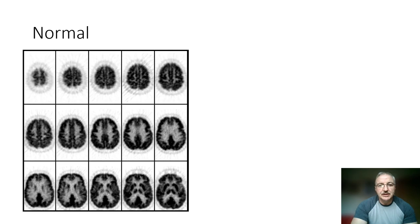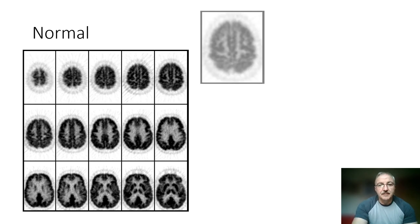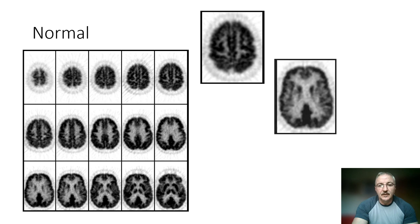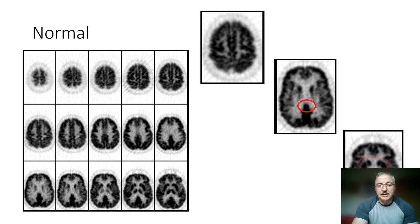Let's start with a normal study. Here we see a relatively homogeneous uptake throughout the right and left cerebral hemisphere. We see good definition of the superior cortical lobe gyri. We see relatively good display at the level of the body of the caudate lobes. We see activity within the right and left posterior cingulate gyri, although there is some loss of definition.